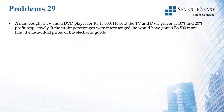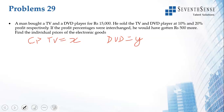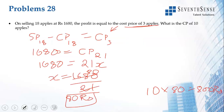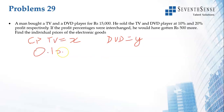Next problem: a man bought a TV and DVD player for 15,000 rupees. He sold the TV at 10 percent profit and the DVD player at 20 percent profit. Let cost price of TV = x and DVD = y. So x + y = 15,000. The profit from TV is 0.1x and from DVD is 0.2y; together that total profit is z. So: 0.1x + 0.2y = z.